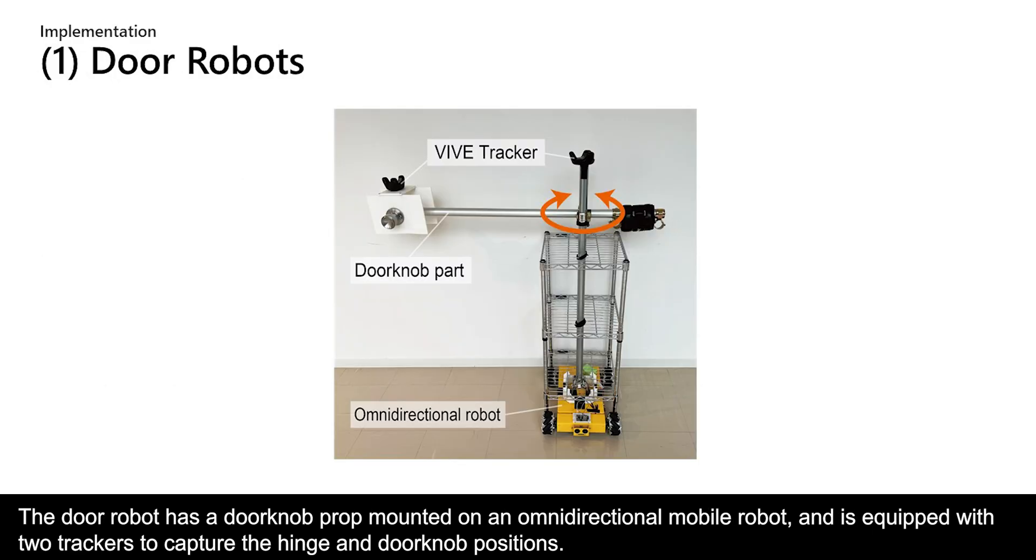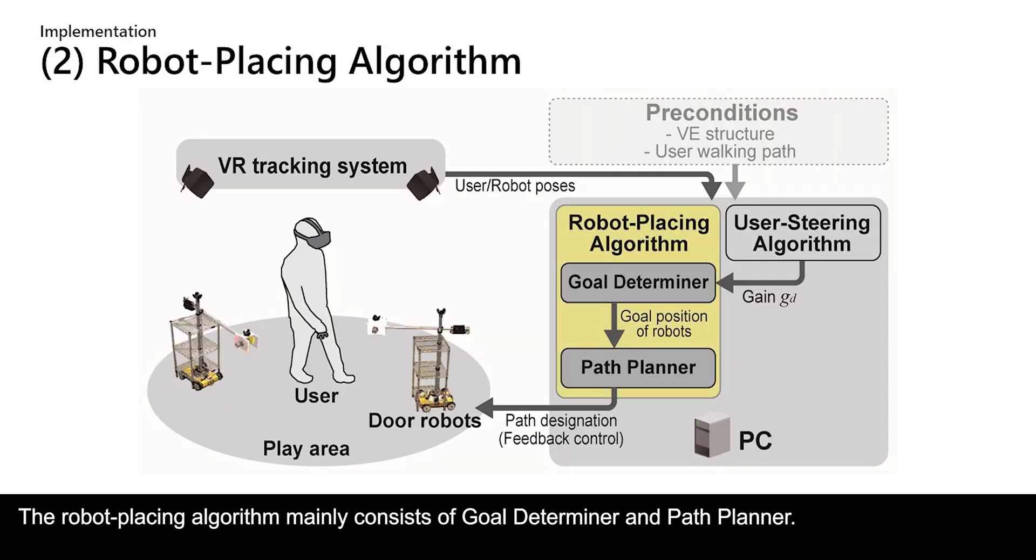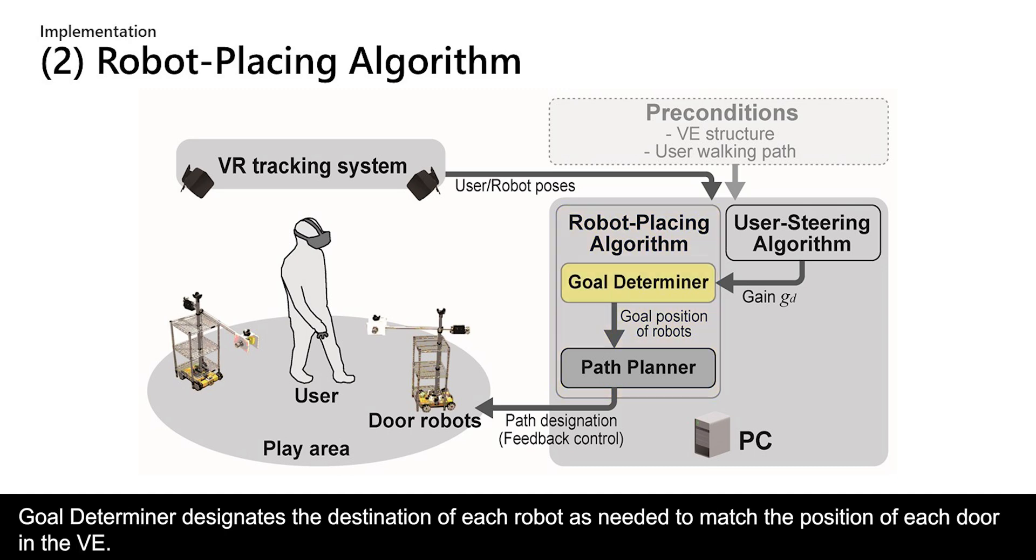The door robot has a doorknob prop mounted on an omnidirectional mobile robot and is equipped with two trackers to capture the hinge and doorknob positions.